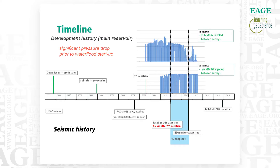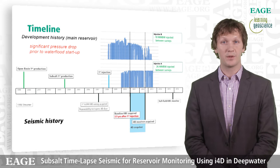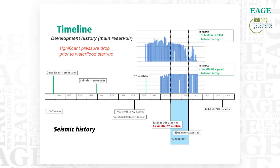Here's a timeline showing production and injection at both fields. We had a streamer survey in 1996 pre-production. Our first field, the open basin field, came on stream in 1999, and then in 2003 the subsea tieback — the subsalt northern field — came on stream. These are both using depletion drive at this point, so we're dropping pressure. We lost several thousand psi of pressure before we started the water flood program. Our first water injector, injector B, came on stream in 2003.